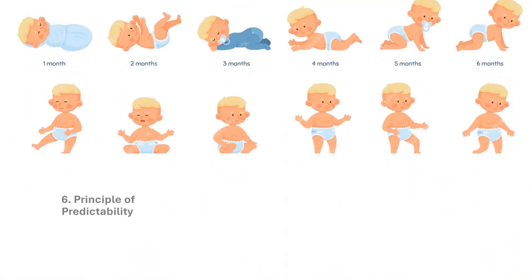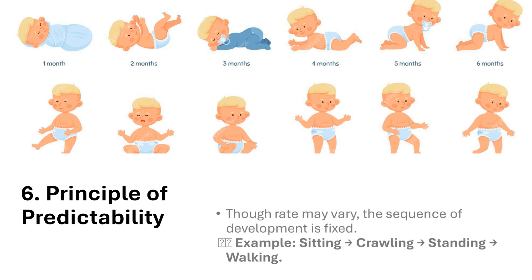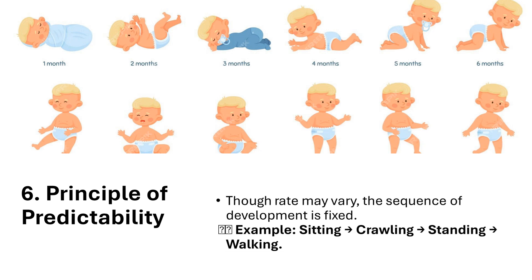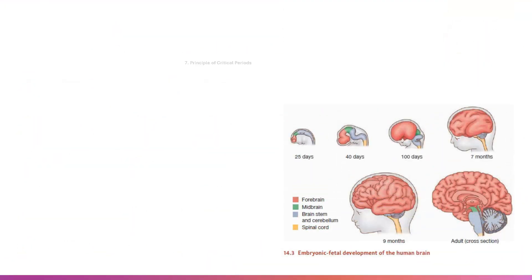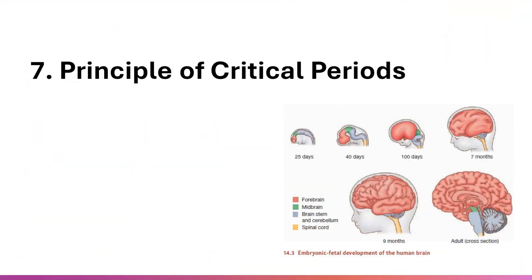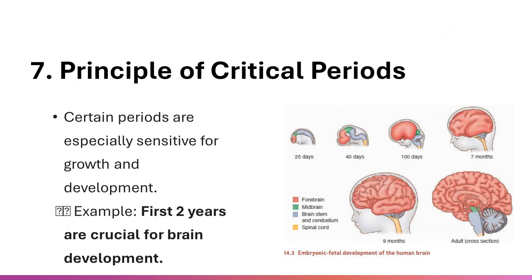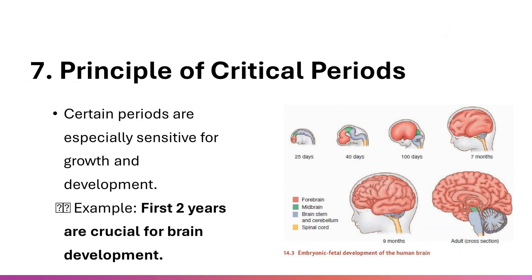Principle 6 — Predictability: though rate may vary, the sequence of development is fixed. Example: sitting, crawling, standing, walking. Principle 7 — Critical periods: certain periods are especially sensitive for growth and development. Example: the first two years are crucial for brain development.